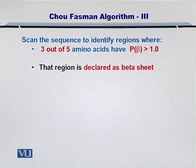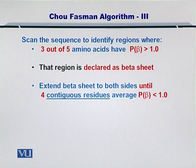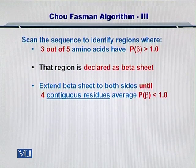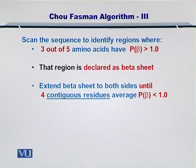Once declared as a beta sheet, you expand it by extending the beta sheet to both ends — upstream and downstream of the sequence. You extend the beta sheet to both sides until you find 4 contiguous residues with an average propensity for formation of a beta sheet less than 1. If you find such 4 amino acids with propensity fallen below 1, then you stop forming a beta sheet from those residues.